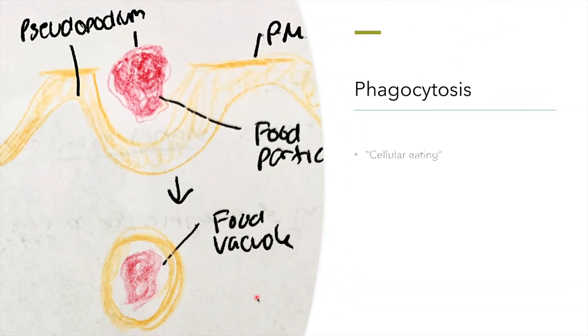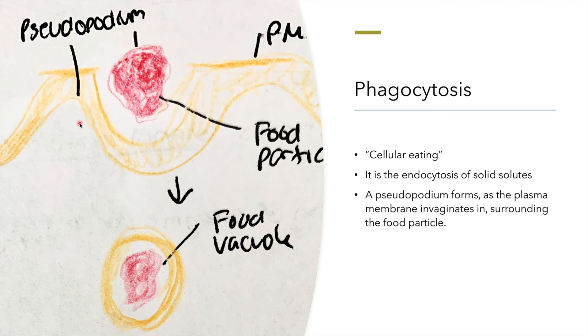Phagocytosis is known as cellular eating. It is the endocytosis of solid particles as the cell engulfs the large solute. A pseudopodium forms as the plasma membrane invaginates surrounding the food particle. Once the vesicle pinches off, it is known as a food vacuole.